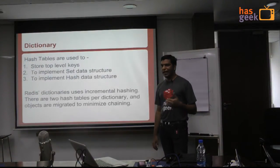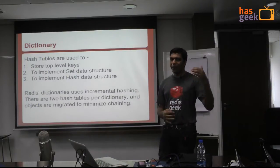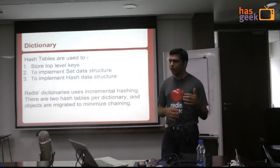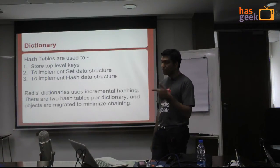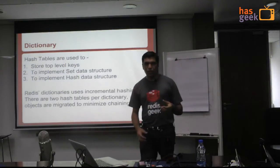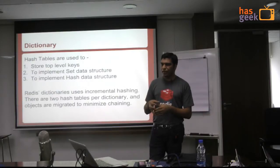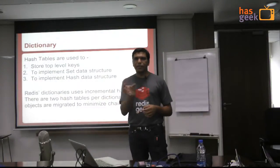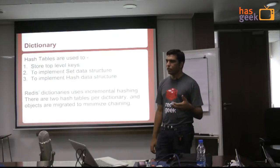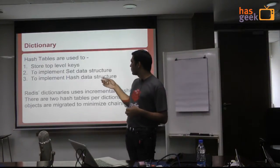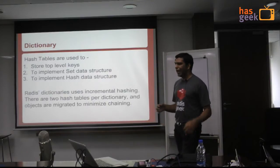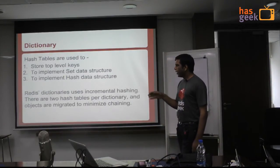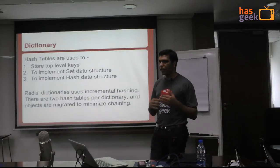Dictionary is basically a hash table, and after strings, this is the second most common structure. All your top-level keys are stored in a dictionary, and the values could be any of the five data structures. Hash tables are also used internally to implement the set — so Redis has the logical data type called set, and internally a set is implemented using a hash table. Similarly, you've got the hash data structure where you can store key-value pairs. So there are three main places where hash is used: top-level keys, set elements, and the hash data structure.